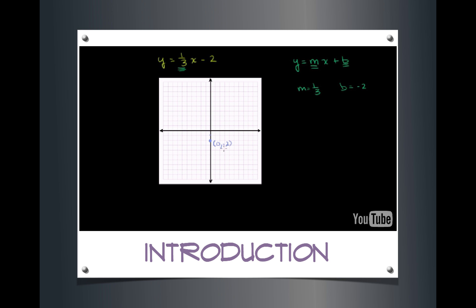If you don't believe me, there's nothing magical about this — try solving for y when x is equal to 0. When x is equal to 0, this term cancels out and you're just left with y equals negative 2. So that's the y-intercept right there. Now, 1/3 tells us the slope of the line — how much do we change in y for any change in x. That tells us 1/3 is equal to the change in y over the change in x.